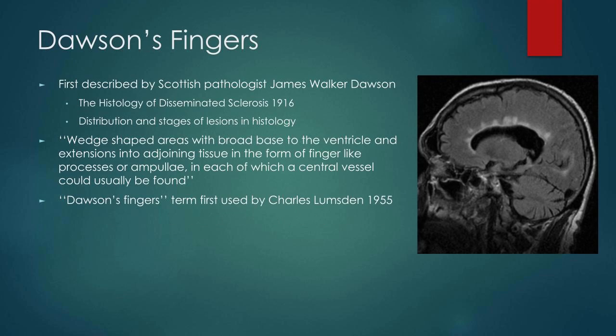Most people are aware of Dawson's fingers that we see in patients with demyelination. This was first described by a Scottish pathologist called James Walker Dawson in his publication 'The Histology of Disseminated Sclerosis,' which was histology-based and substantially predated any imaging. He described the distribution and stages of lesions in what was then called disseminated sclerosis, noting wedge-shaped areas with a broad base to the ventricle and extensions into adjoining tissue in the form of finger-like processes, in each of which a central vessel could usually be found.